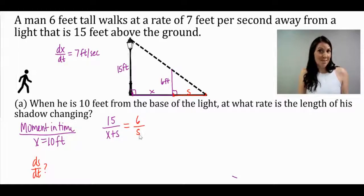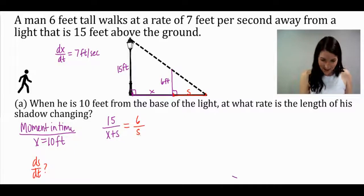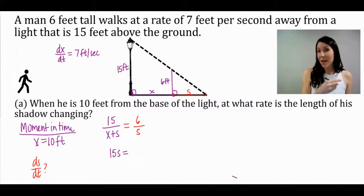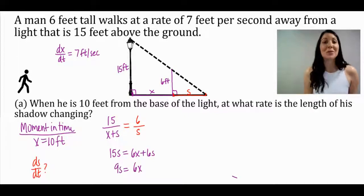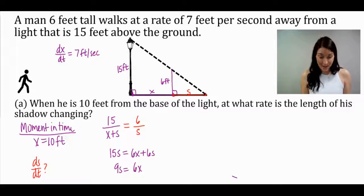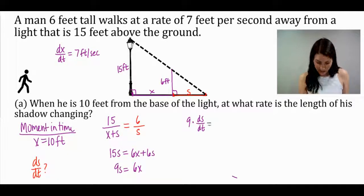What's the best way to solve a proportion? Cross multiply. 15 times s equals, and as we cross multiply the other way, don't forget to distribute the 6. Subtracting 6s on both sides gives us 9s equals 6x. It is at this point that I am going to differentiate. That means to find the derivative. The derivative of 9s would be 9 times ds/dt. This is a related rates problem, so I'm differentiating everything with respect to time. The derivative of 6x is 6 times dx/dt.